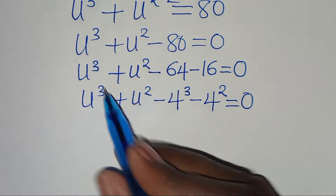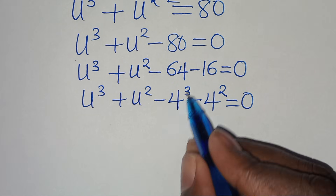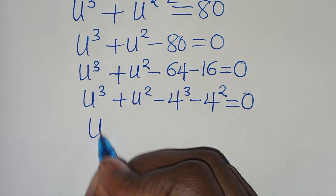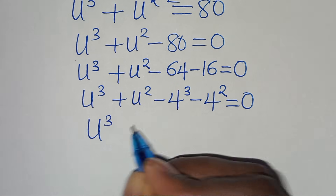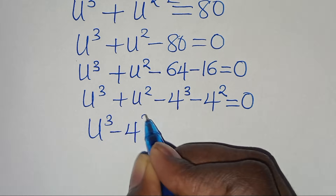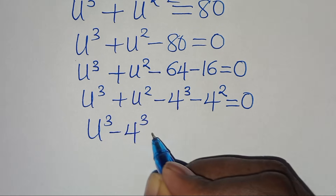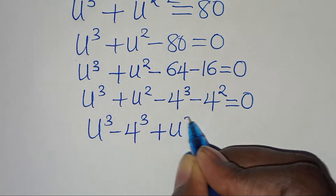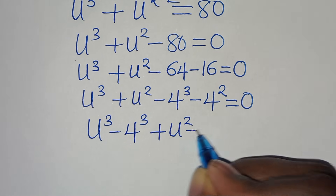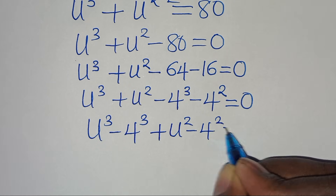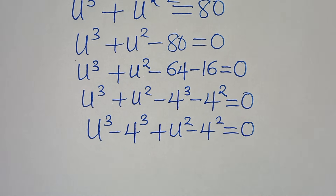So we have u to the power of 3 minus 4 to the power of 3, then plus u to the power of 2 minus 4 to the power of 2, and this is equal to 0.